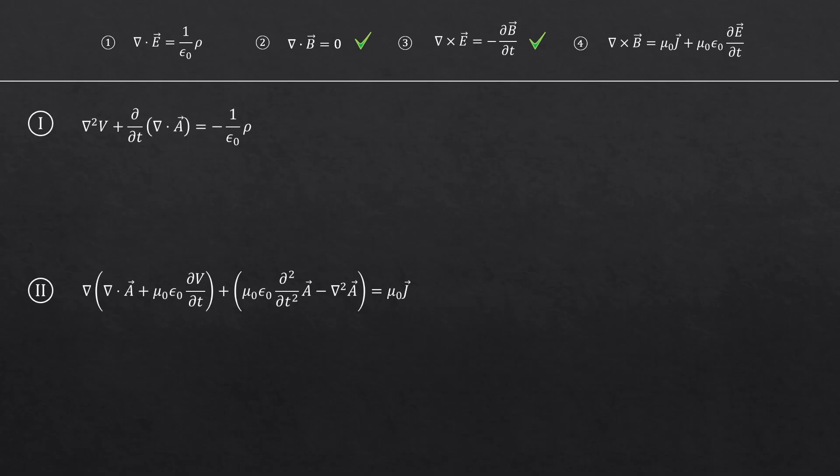Okay, so I brought the two expressions here. All four Maxwell's equations are now packed into these two expressions. All of them checkmarked. Now, if you look at them, both expressions contain the divergence of A. I did mention that the curl of the vector potential gives us the magnetic field, but I don't think I ever talked about the divergence of the vector potential, right?